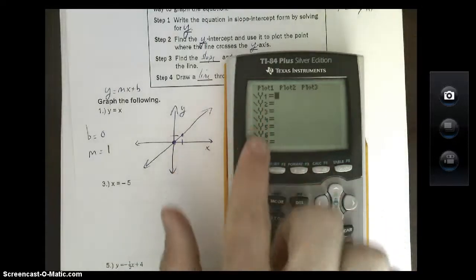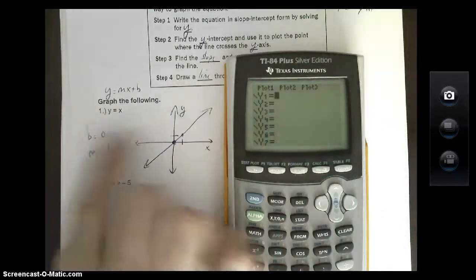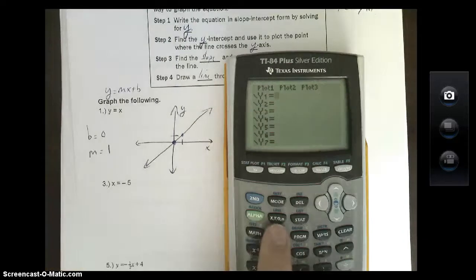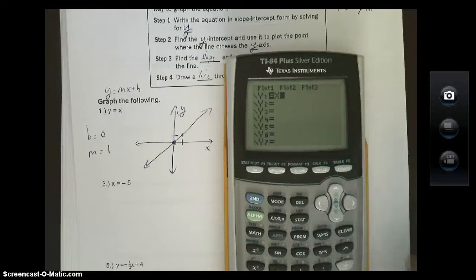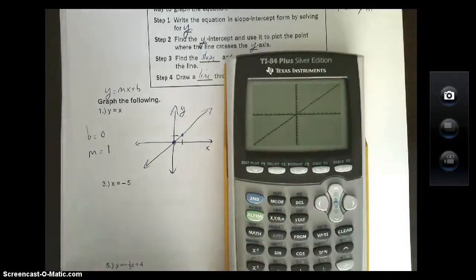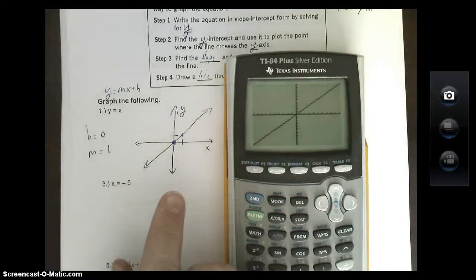It says y sub 1 and y sub 2 all the way down. We want to type in exactly what we see. In this case, y equals x. The button right next to alpha is your x button. Now I've got my equation. Top right is your graph. Wouldn't you know, it looks exactly like the graph we just constructed.